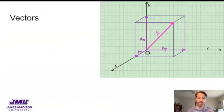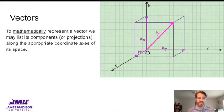But to mathematically represent a vector, we have a couple ways that we could do it. One is to list its components or projections along the appropriate axes of the space that it inhabits. So for example, this vector in this slide extends from the origin out to this point, and that means that in x, y, z space, this vector has a projection or a component, a subscript x. That's how far our pink vector extends in the x direction. And a subscript y is how far it extends in the y direction. And a subscript z is how far it extends in the z direction.